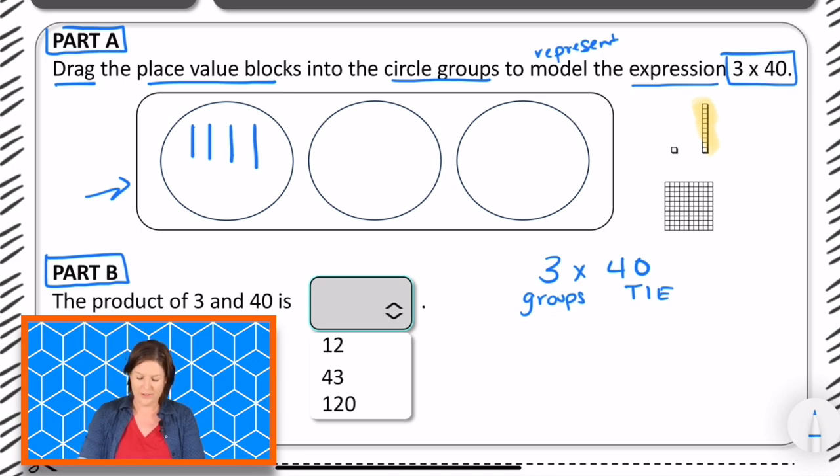Drag in some more. Drag in 10, 20, 30, 40. And drag in 10, 20, 30, 40. There we go. So we've dragged in the place value blocks to represent the expression of 3 times 40.